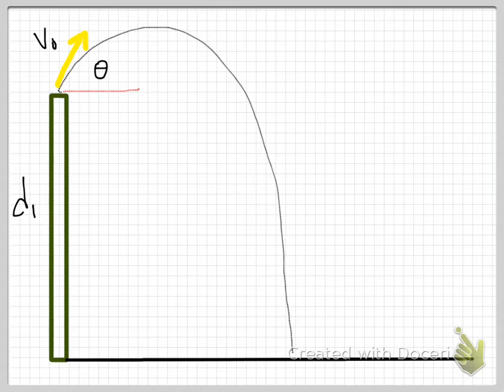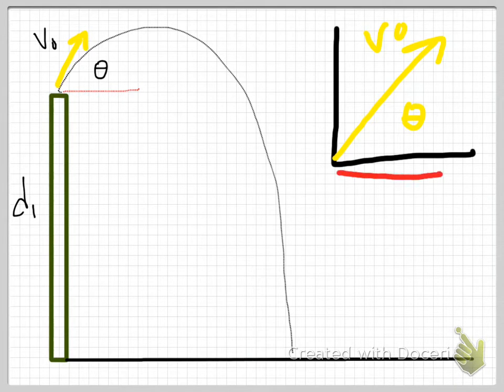So the first thing I'm going to do is resolve this into components. Let me draw that a little bigger for you. Here are my axes. Here is my v₀ vector. I've zoomed in on the top of my building. I've got v₀ here at an angle θ. This will show you the process of resolving these into components. So just visually, I can see that my x component is going to look a little bit like this - this is v₀ₓ. My y component will look something like this.